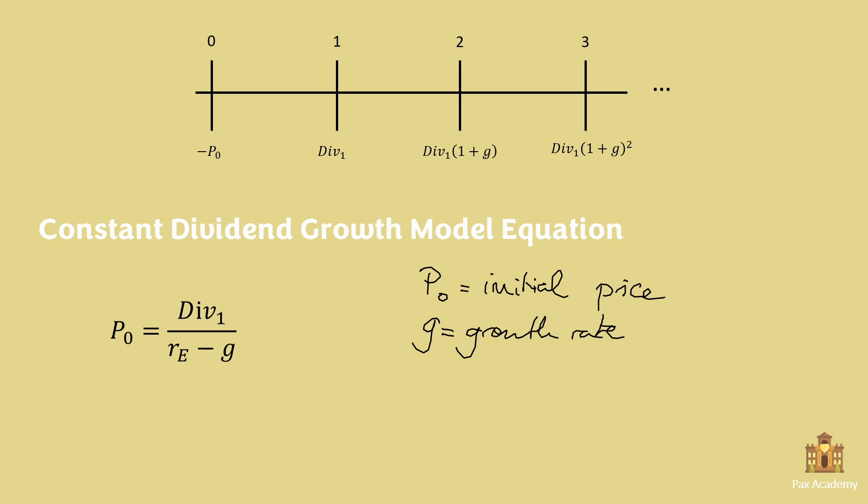And from this timeline what we can derive is that the constant dividend growth model equation is this. In order to find out the initial price of a stock that gives dividends and that grows at a constant rate forever is equal to the dividend that it pays every year over the equity cost of capital minus the growth rate. So dividend one is the dividend that it pays and rE is the equity cost of capital.